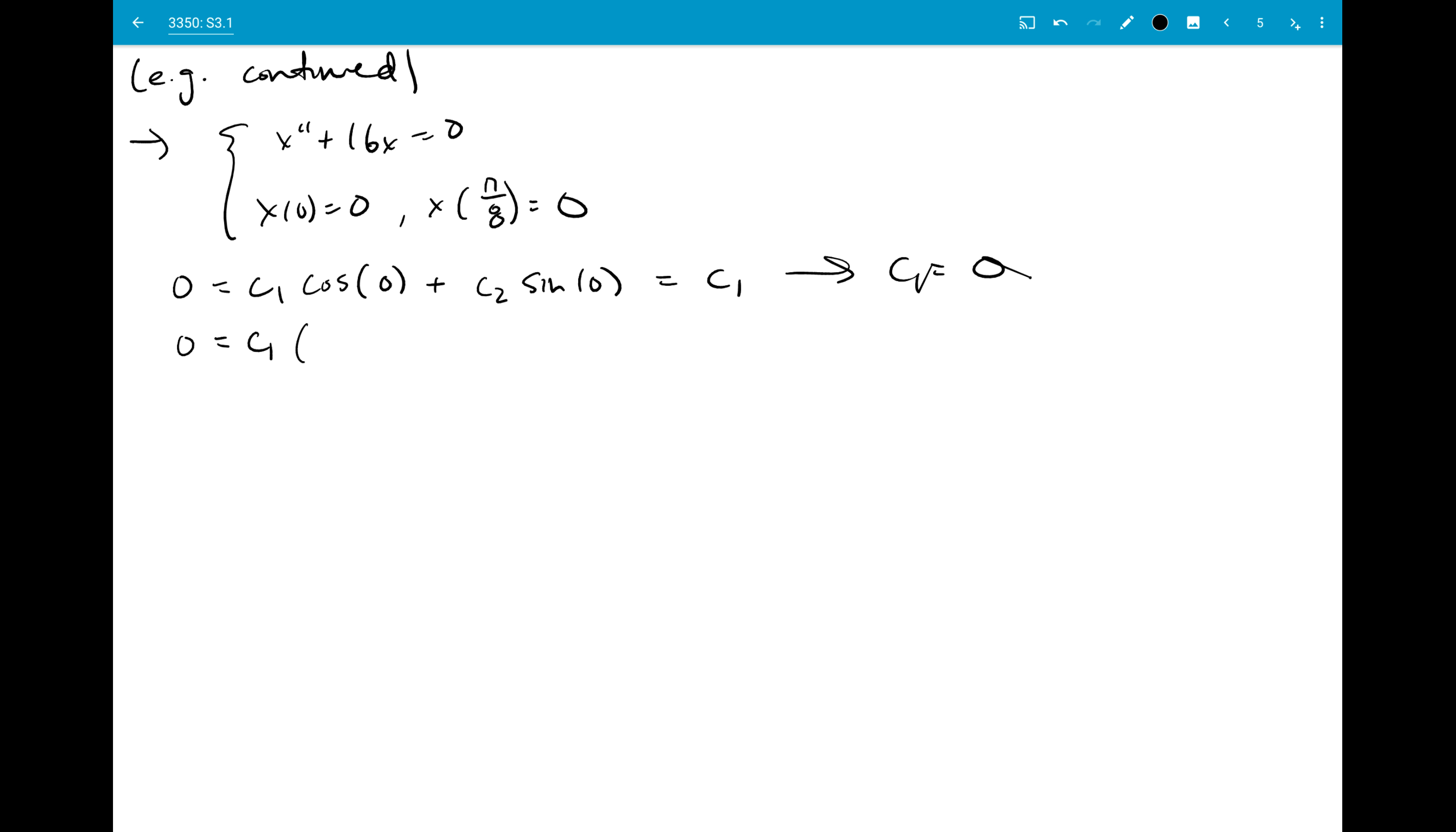And when I plug in pi over 8, I get 4 times pi over 8, so that's just pi over 2. And that's just going to give me c2 this time, because sine of pi over 2 is going to be 1, cosine pi over 2 is going to be 0. So if I want this equal to 0, I have to have c2 equal to 0.